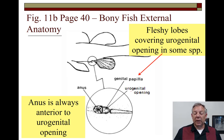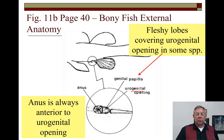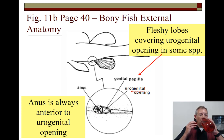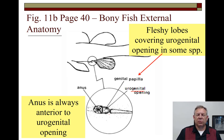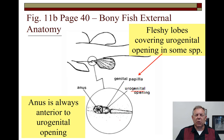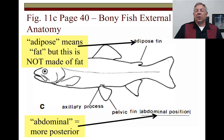The urogenital opening is found close to the anus. The anus is always anterior to the urogenital opening, but they're often found close to one another. In some fish, the anus is found very anterior, up in the throat region, and presumably the urogenital opening is up there too in those species.